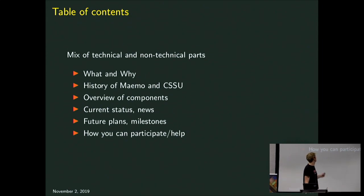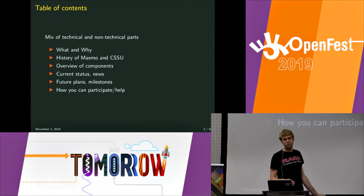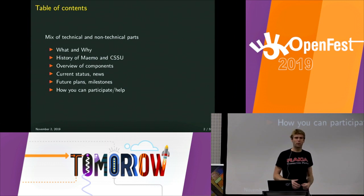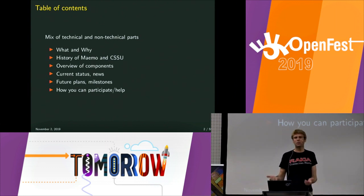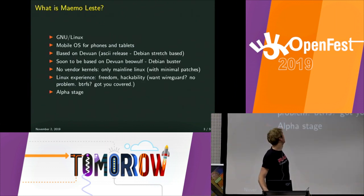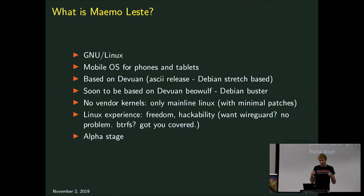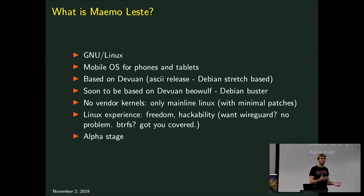I gave a talk about this project last year at OpenFest. It was a pretty small talk — we had basically just started out and wanted to show what we were doing. Now we've got a lot further. There are a couple of slides that will be the same as last year, but it's mostly different. So what is Maemo Leste? The talk is specifically about GNU slash Linux, which typically means Linux as in the kernel and GNU as in the operating system itself.